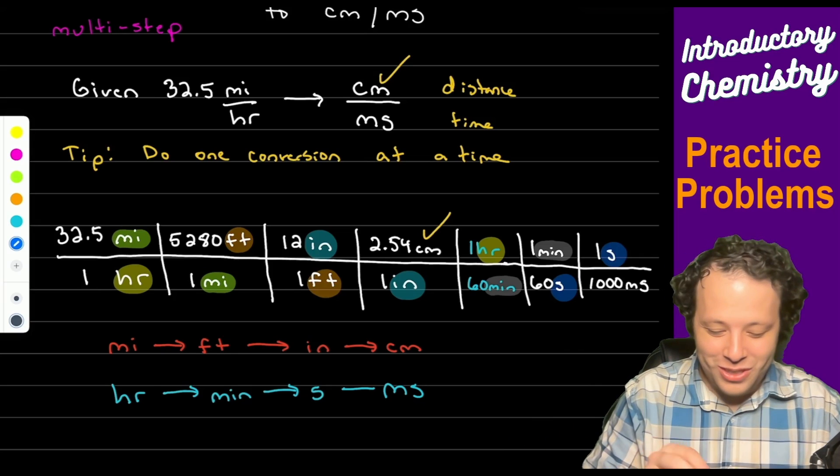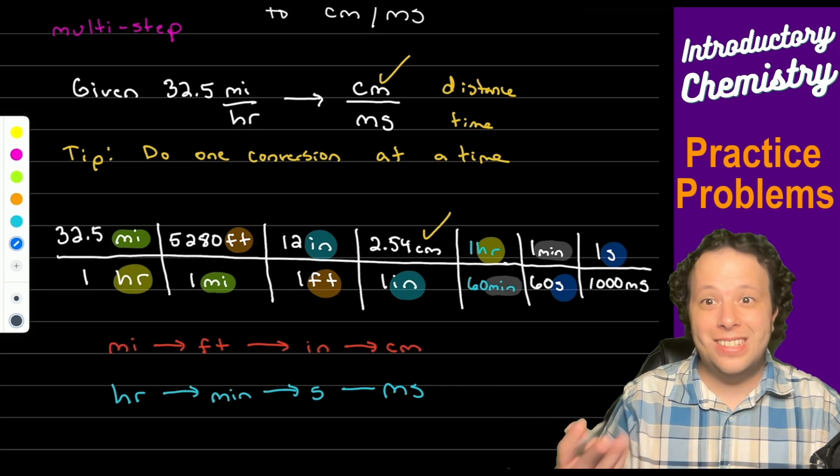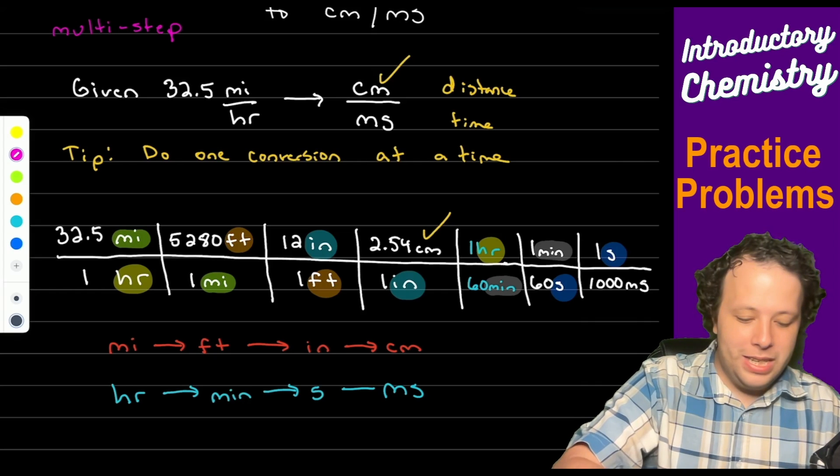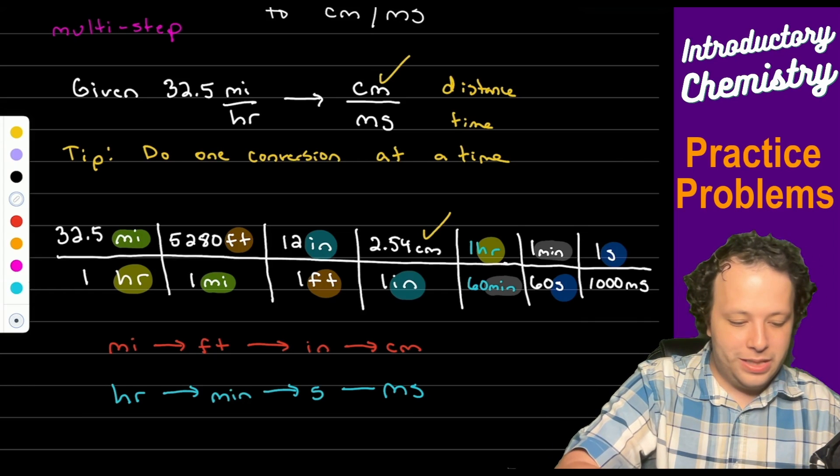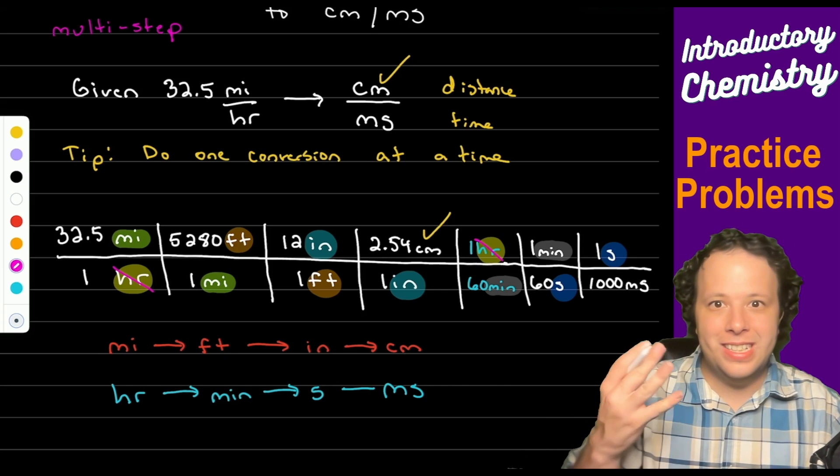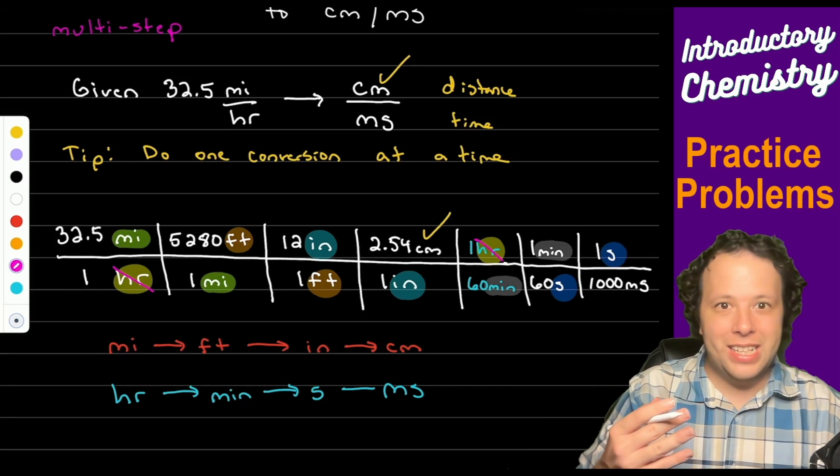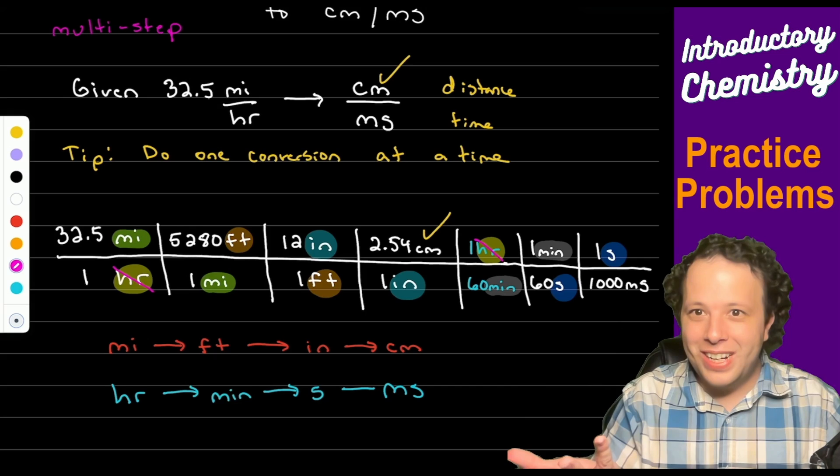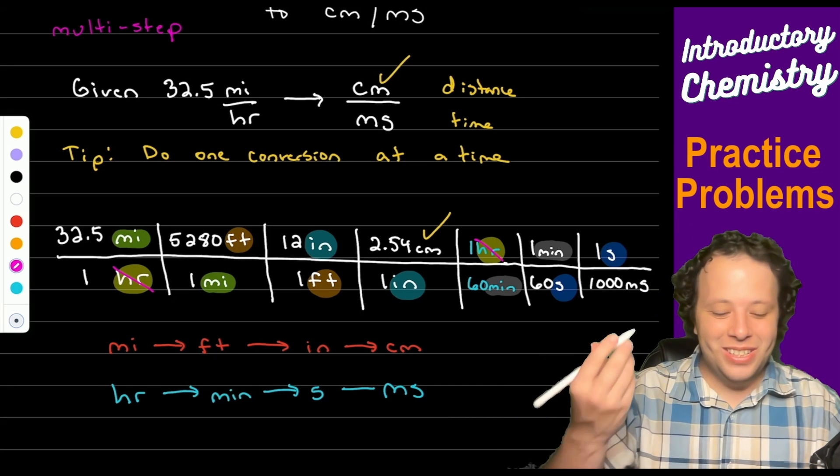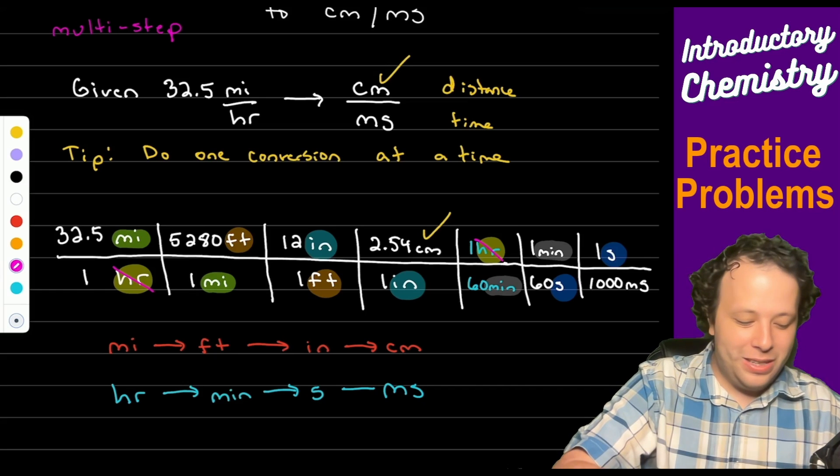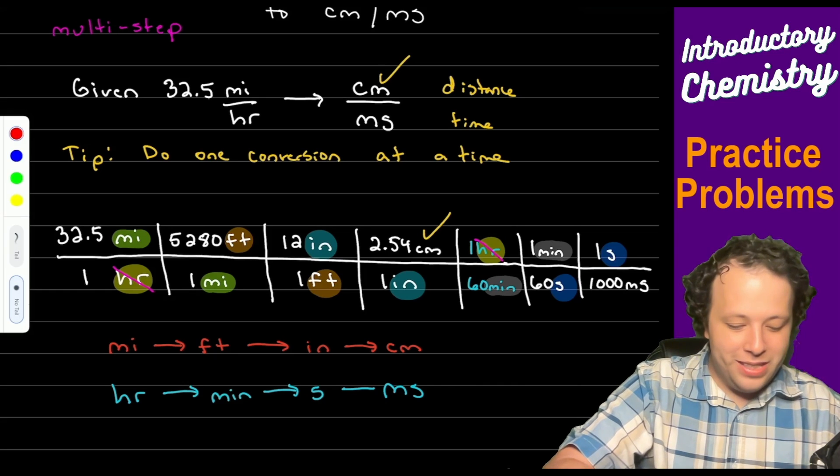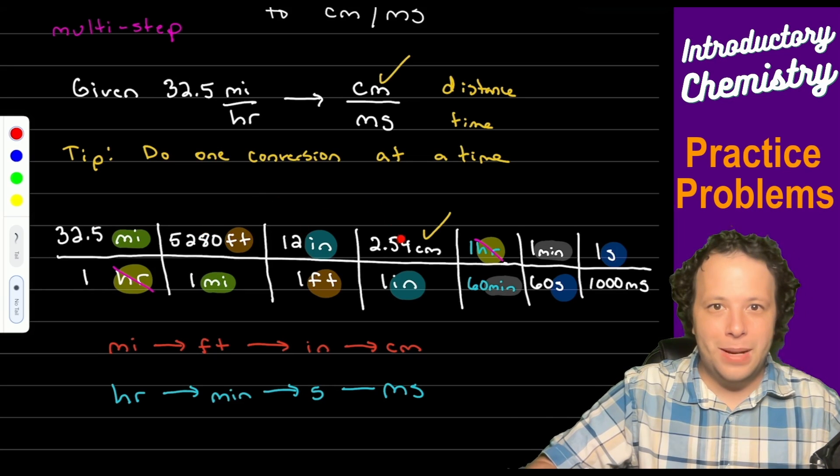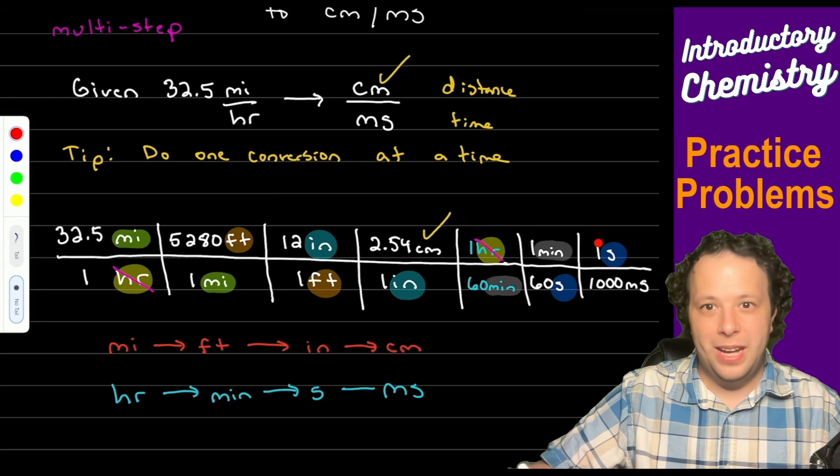Look how crazy long this is. There's 1, 2, 3, 4, 5, 6 steps for this problem. But the one thing is noticing the units are canceling. So you can see even hours cancel each other. You can kind of see how far apart those are. The miles cancel each other, the feet cancel, the inches cancel, the minutes cancel, the seconds cancel. So now you got to solve it, put it in your calculator. That's the tough part. The way to put this in your calculator is if you follow along, you multiply the top parts. So it's 32.5 times 5280 times 12 times 2.54 times one times one times one. So you hit equals on that.